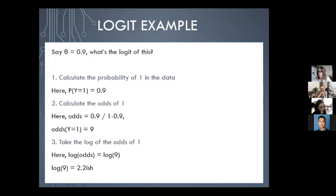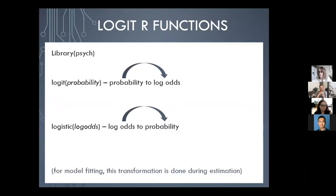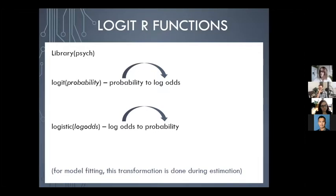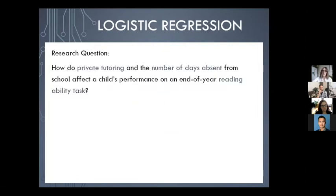For example, if the probability of getting a one is 0.9, the odds are 0.9 divided by 0.1, which is 9, and the log of 9 is about 2.2. In R, there's a library called psych containing two functions: logit (probability to log odds) and logistic (log odds to probability). For model fitting, you just supply zeros and ones and the model handles this transformation internally. But for simulation, we need to simulate in log odds units, convert to probability, and then sample from the distribution.